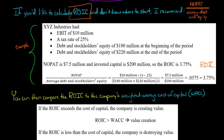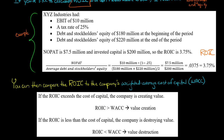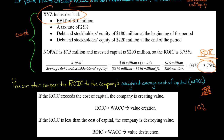What do we do with that 3.75 percent figure? McKinsey recommends comparing it to the company's weighted average cost of capital (WACC). You want the return on invested capital to be higher than the WACC. For example, if the WACC for this company is two percent, then with an ROIC of 3.75 percent, McKinsey would say the company is creating value. But if the WACC is ten percent and the ROIC is only 3.75 percent, then the company is actually destroying value because the weighted average cost of capital exceeds the return on invested capital.